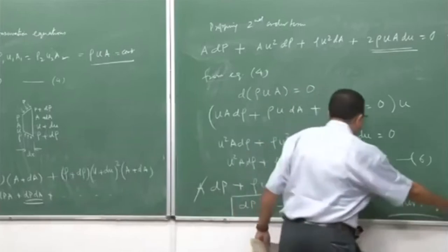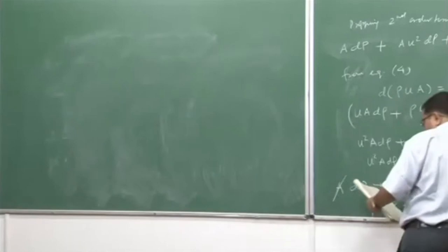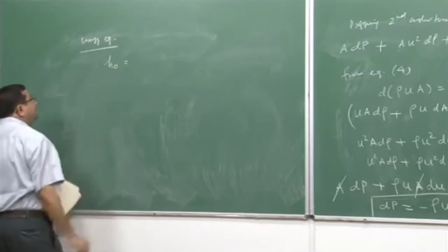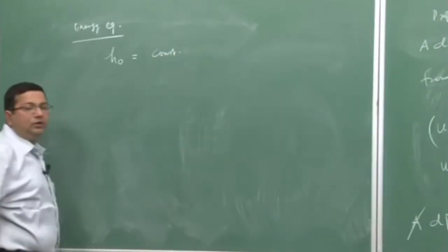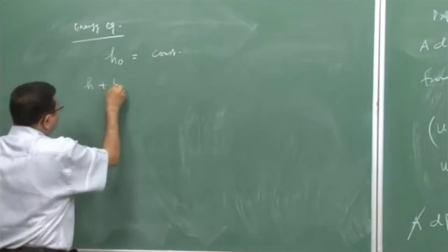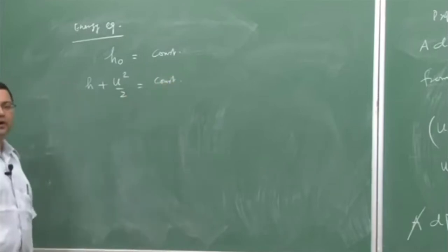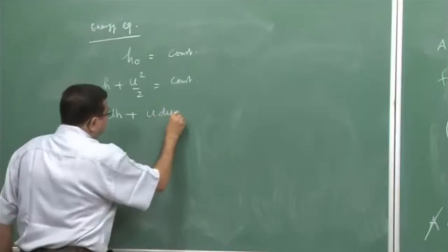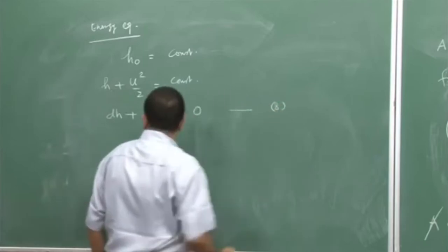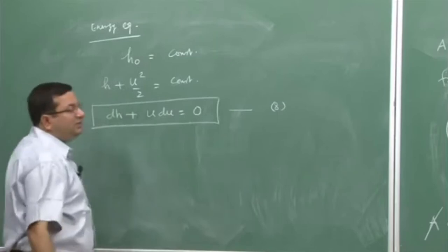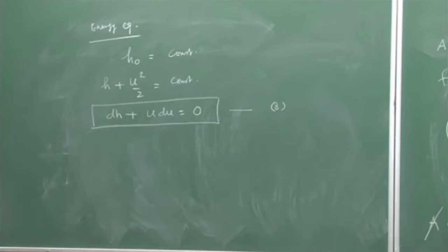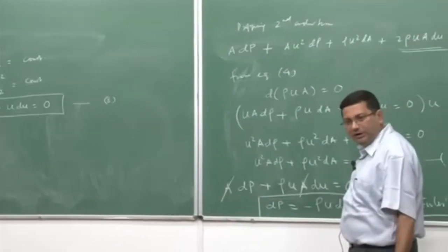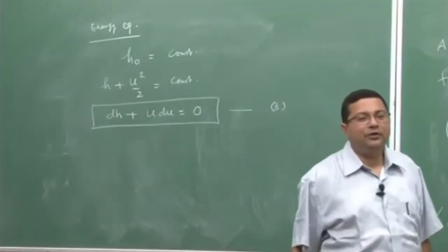Next, let us get the differential form of the energy equation. We have proved that h0 = h + u²/2 is constant for quasi 1-D flow. Differentiating gives dh + u du = 0. We call this equation 8 — the differential form of the energy equation. So equation 4 is the differential continuity equation, equation 7 is the differential momentum equation, and equation 8 is the differential energy equation.